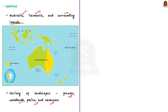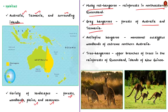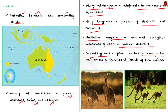The musky rat kangaroo likes to nestle down in little nests on the floor of the rainforest in northeastern Queensland. Gray kangaroos like the forests of Australia and Tasmania. The antilopine kangaroo can be found in the monsoonal eucalyptus woodlands of extreme northern Australia. Tree kangaroos live in the upper branches of trees in the rainforests of Queensland as well as the island of New Guinea.